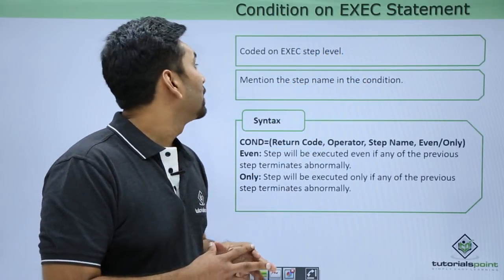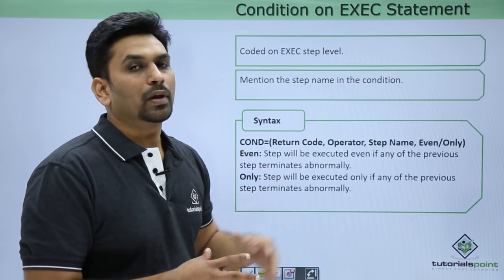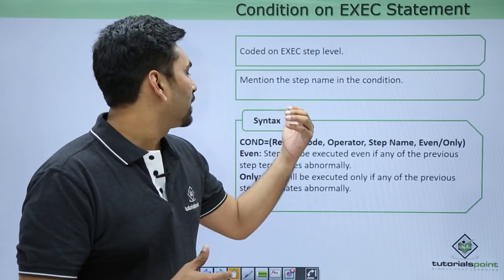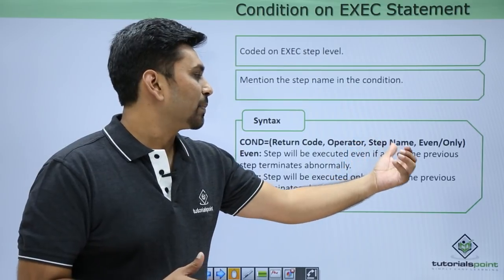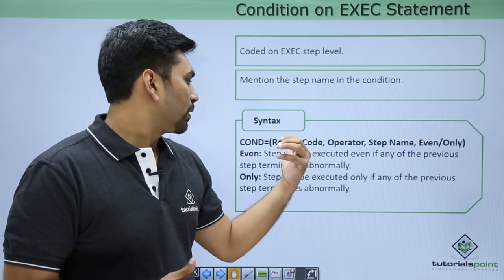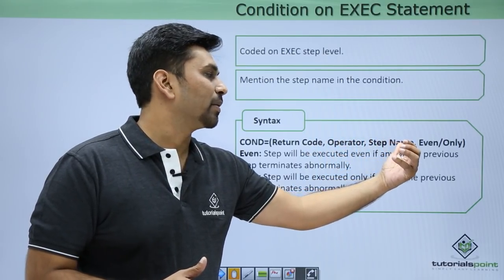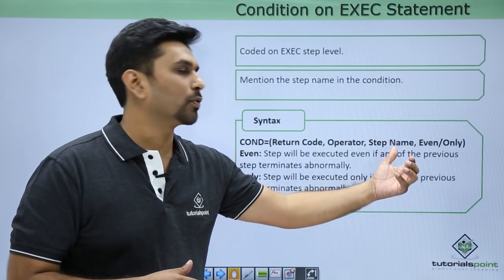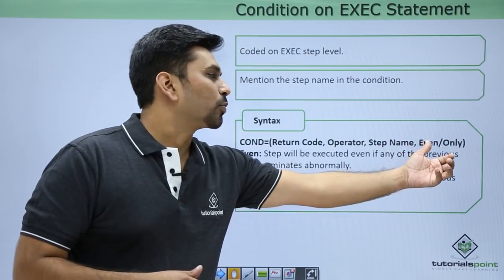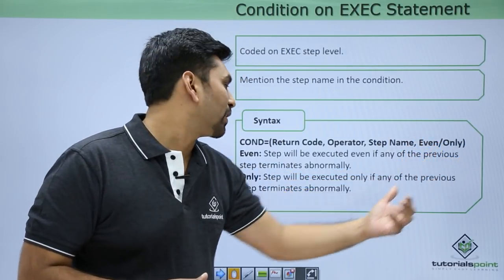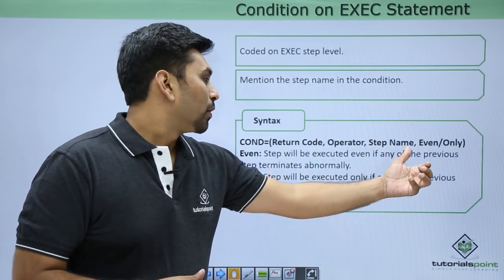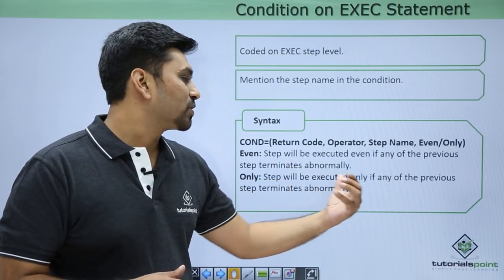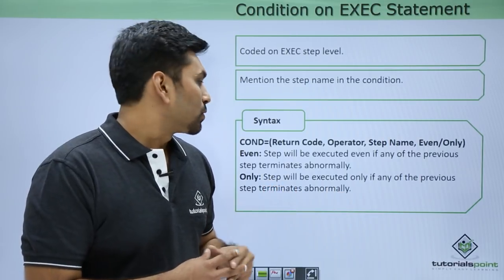Conditions on EXEC statement are coded at the exec step level, not just the job statement level. The syntax is: return code, operator, step name, and optionally EVEN and ONLY. The difference here is you need to mention the step name — from which step it should check the return code, such as step 4, step 5, or step 6. EVEN means the step will be executed even if any of the previous steps terminate abnormally. ONLY means the step will execute only if one of the previous steps terminates abnormally. These are optional parameters.